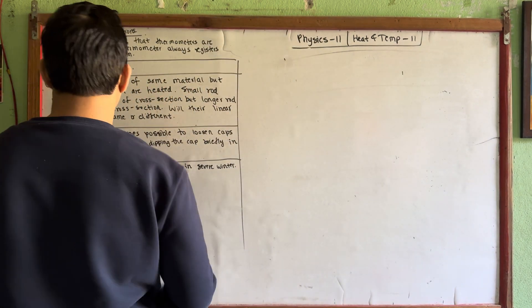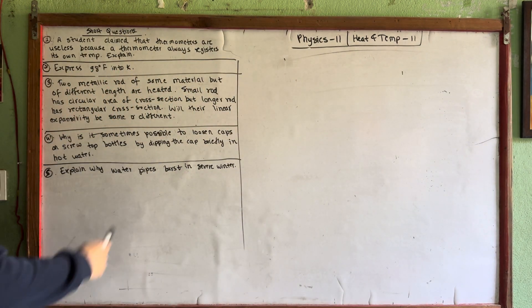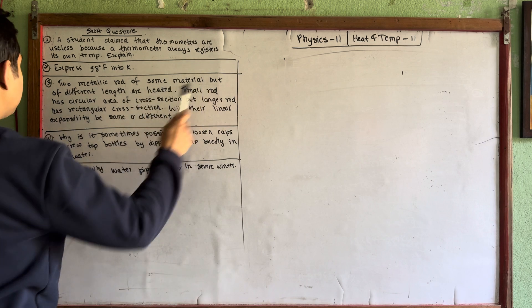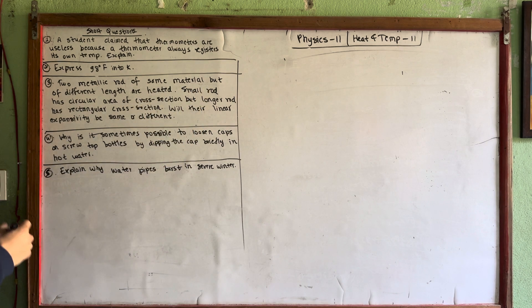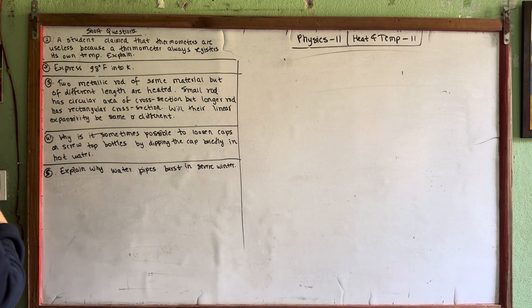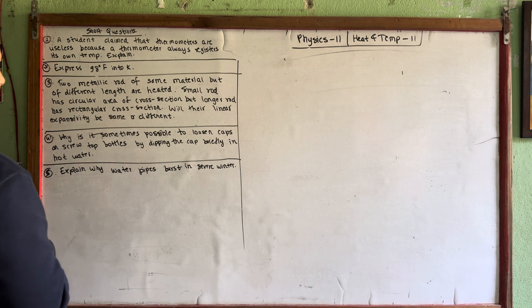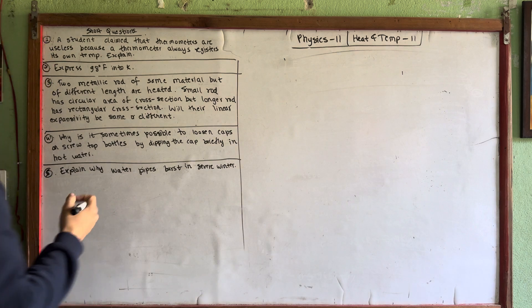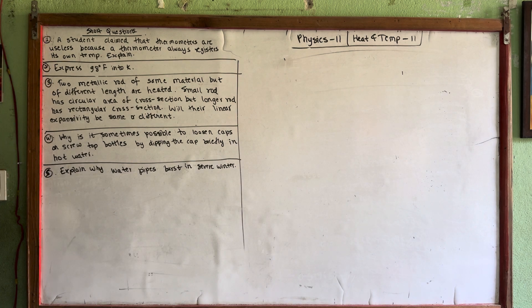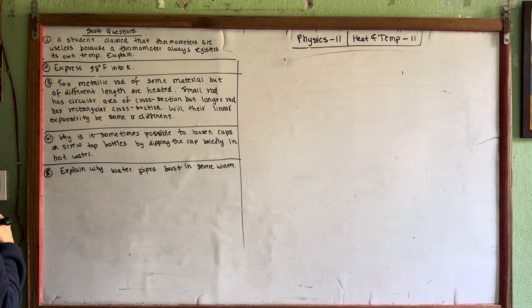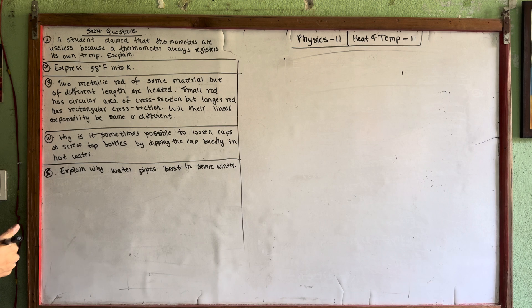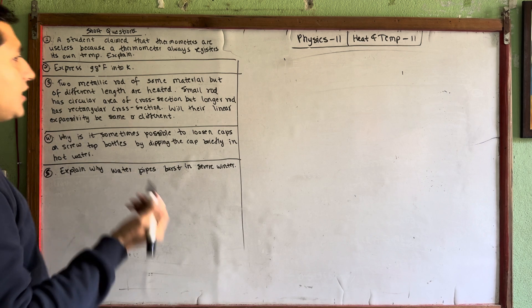Next question: two metallic rods of the same material but different lengths are heated. The small rod has a circular area of cross-section, but the longer rod has a rectangular cross-section. Will their linear expansivity be the same or different?